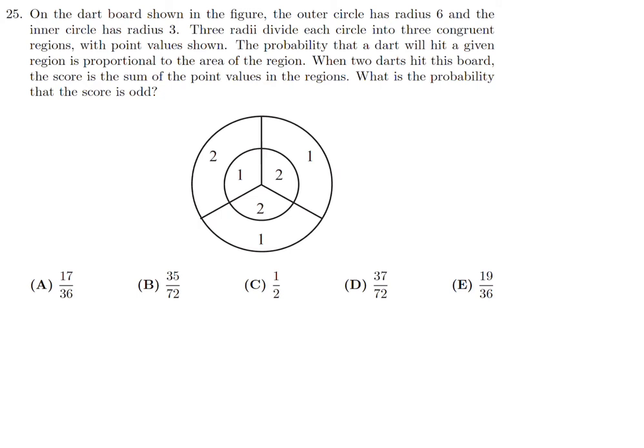On the dart board shown, the outer circle has radius 6 and the inner circle has radius 3. Three radii divide each circle into three congruent regions with point values shown. The probability that a dart hits a given region is proportional to the area of that region. When two darts hit the board, the score is the sum of the point values. What is the probability the score is odd?